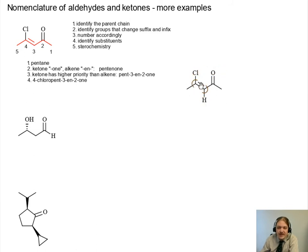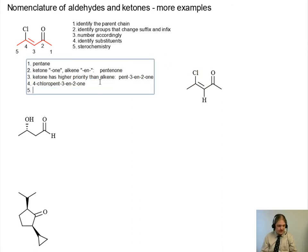So reminder, for alkenes, we can assign an E or Z stereochemical label based on whether the higher priority groups are on the same side or on opposite sides. And in this case, on carbon atom-3, the ketone group has higher priority over hydrogen. And on carbon atom-4, the chlorine group has higher priority. So this is a Z-4-chloropent-3-en-2-one.